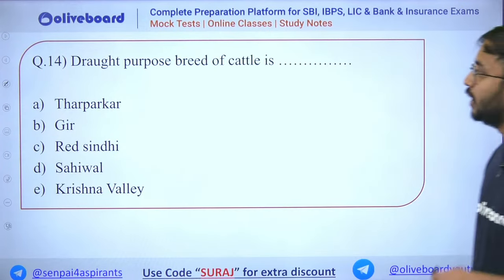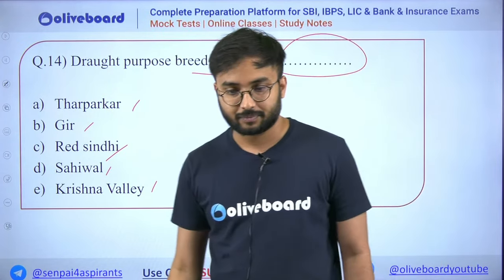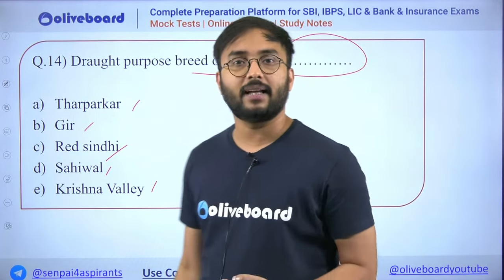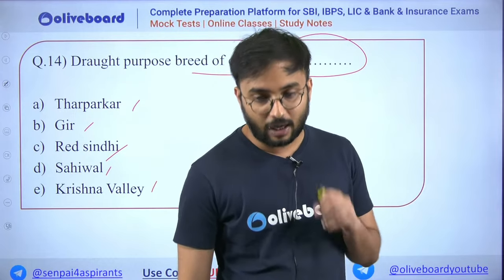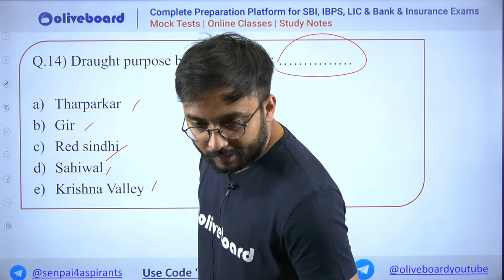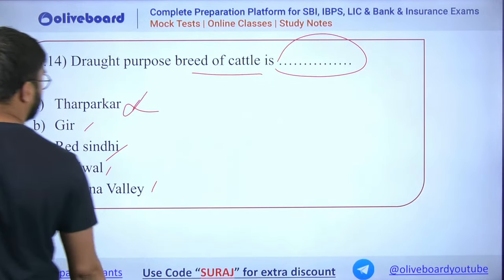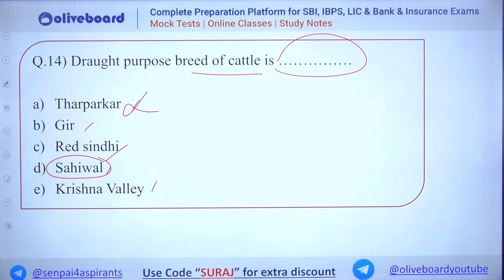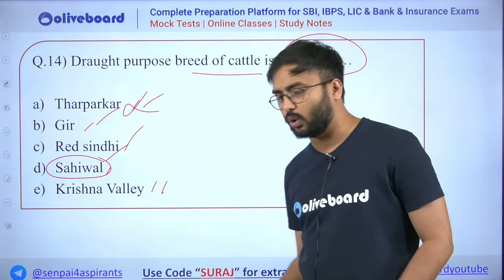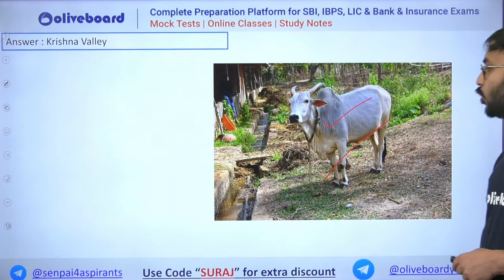Next: Draught purpose cattle breed — Tharparkar, Gir, Red Sindhi, Sahiwal, or Krishna Valley? Sahiwal is a milch purpose breed. Red Sindhi, Gir, Tharparkar are not draught purpose. Krishna Valley is the only draught purpose breed among these options.